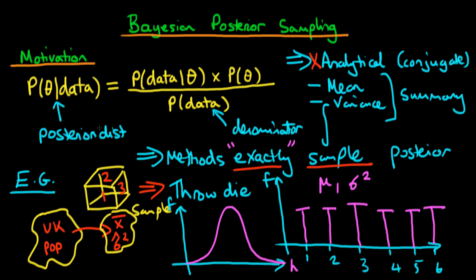And in theory, if we know sufficient summaries of our data, that should be sufficient to go ahead and do Bayesian inference and prediction. To summarise: sampling from the posterior distribution, if we can do it exactly, provides quite a nice window into describing what the posterior distribution actually looks like. Although the method doesn't exactly tell us what the posterior distribution looks like, the window might be sufficiently large that we gain enough information — at least sufficient information about the posterior — to allow us to go ahead and do Bayesian inference and prediction.